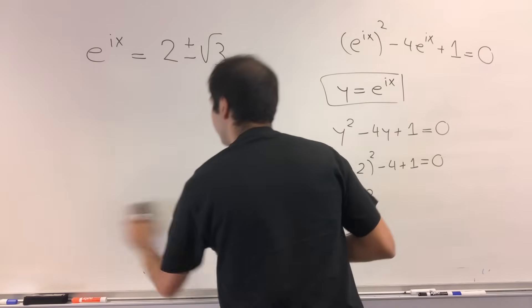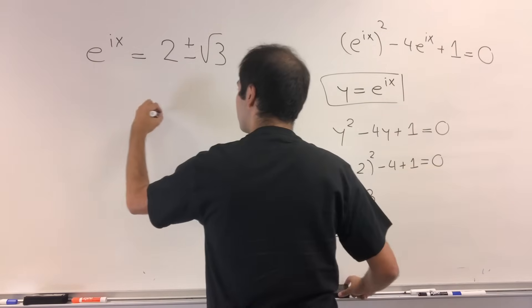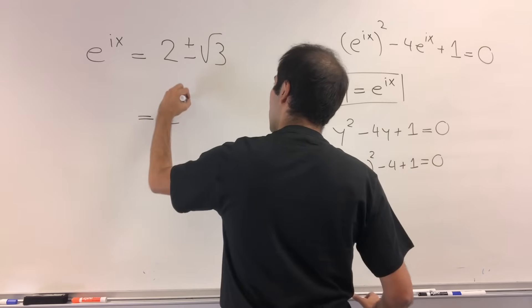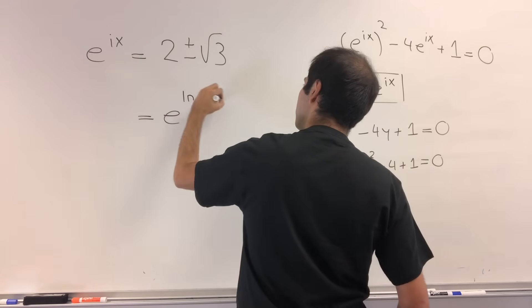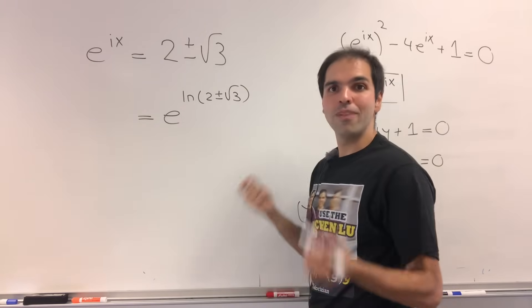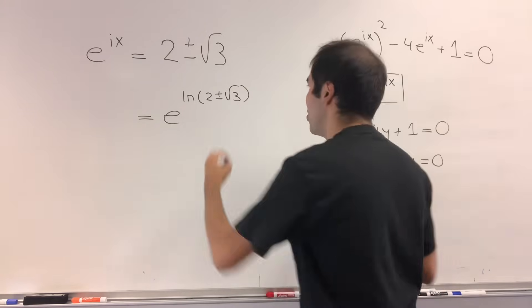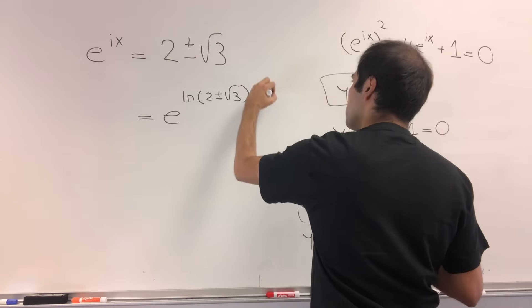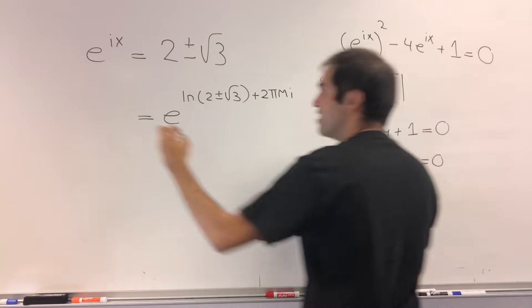So notice this just becomes e to the ln of 2 plus or minus square root of 3. And you can always add multiples of 2 pi i in the complex world. So plus 2 pi mi where m is any integer.